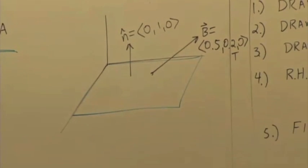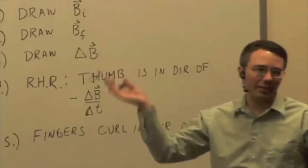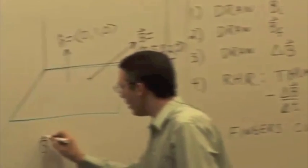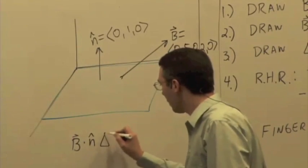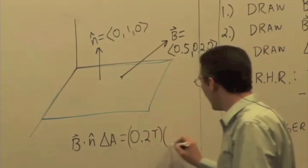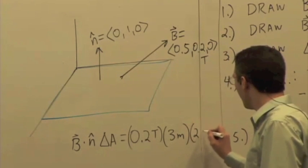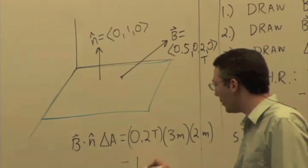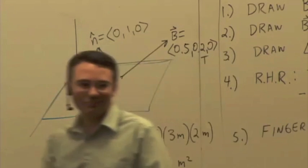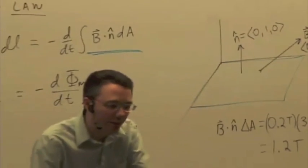Then B dot N hat is just going to give you 0.2, right? It's only the component that's perpendicular to that surface that's going to matter. So, B dot N hat times the area is just going to be 0.2 Tesla times, what was it, 3 meters by 2 meters. Or 1.2 Tesla meters squared, okay? That's just the magnetic flux. We calculated the same way as we calculated electric flux on a surface.